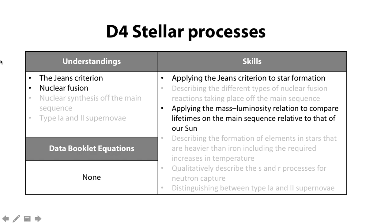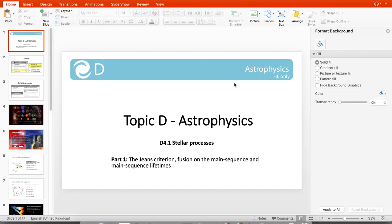So we've looked at nuclear fusion on the main sequence and the Jeans criteria, we've applied the Jeans criterion, and we've applied the mass luminosity relation to compare lifetimes. That's us done. Thank you very much.